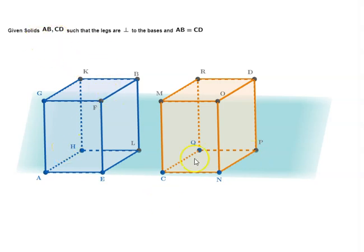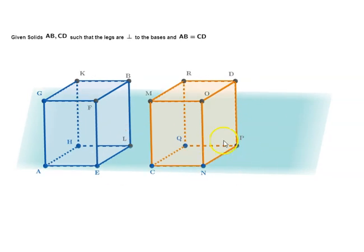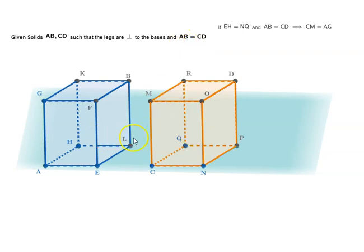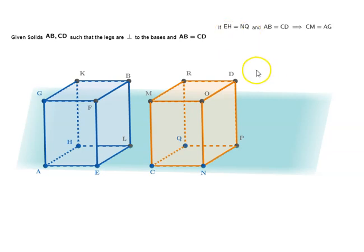Given solids AB and CD such that the legs are perpendicular to the bases and the volume of AB is equal to the volume of CD. Within this, one situation is when the bases are equal. So if EH (the base of AB) is equal to NQ (the base of CD), and AB equals CD, that means the heights CM and AG are also equal.